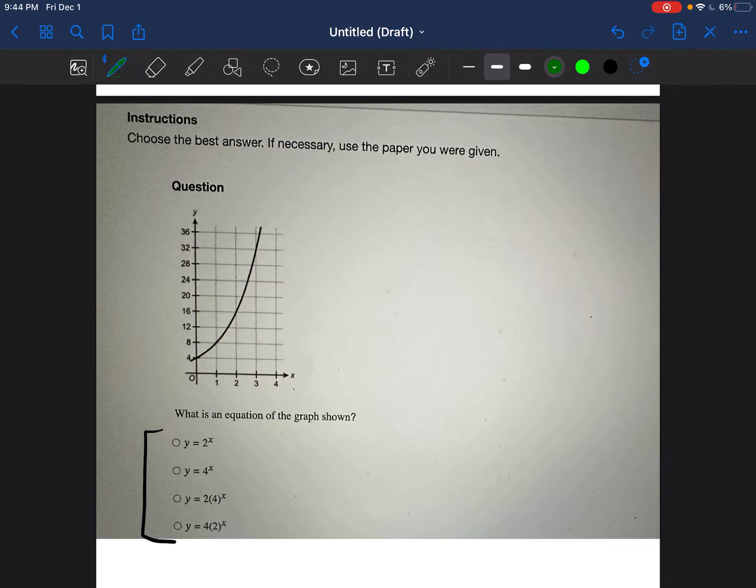So our very first step is to find a point on the graph. And as a reminder, a point is x, y. So if we look at this, this looks like it's exactly on that point. So that point would be 1 comma 8.